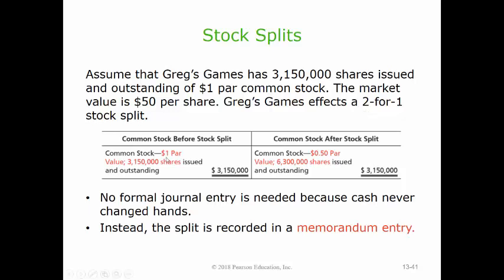If you take the par value of a share and multiply it by the number of shares outstanding at the time, you get the overall value of your common stock. So $1 par times 3.15 million shares means that before the split, Greg's Games had $3,150,000 worth of common stock. After the split, they have 6.3 million shares, each one with a par of $0.50. Well, 6.3 million times $0.50 is still $3,150,000. So the split is only changing the number of shares out there and the per-share par price, but what doesn't change is the overall amount that Greg's Games would have recorded on their books in common stock.